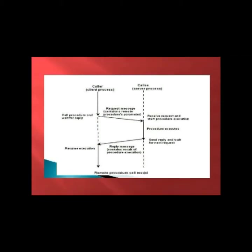There is a client process and a server process. The client process is the caller. The client process sends a request message, and on receiving that message, the server process starts procedure execution. After completing execution, the server process sends a reply and waits for the next request. The client process then gets the reply message and resumes execution. This diagram explains the simple working of Remote Procedure Call.